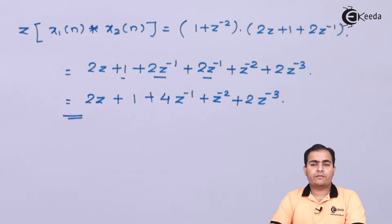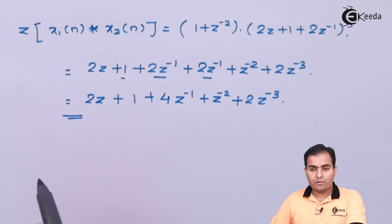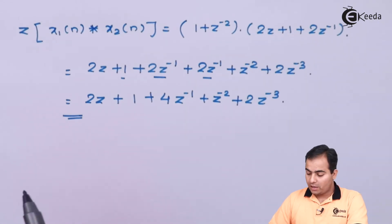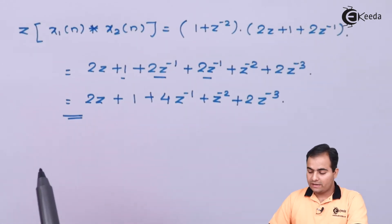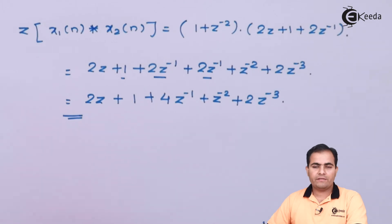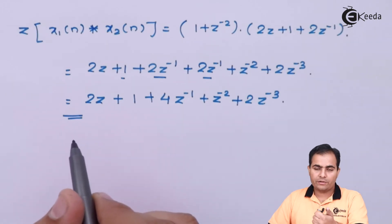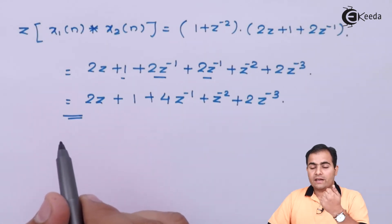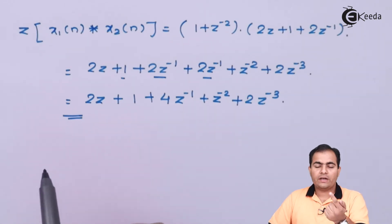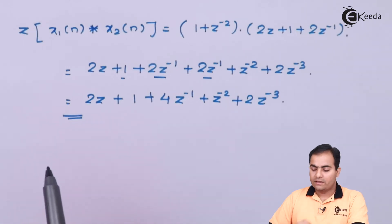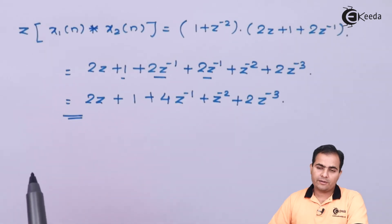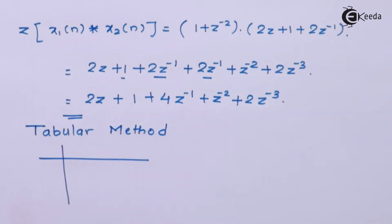There is another way to perform convolution. The new technique I am going to show you is used in higher semesters. There are different ways to find convolution: first is the graphical method, second is the tabular method which I will show you now, and the last is the circular method.